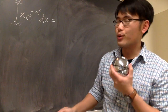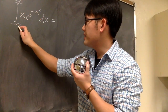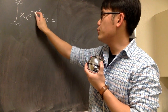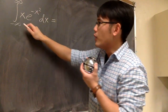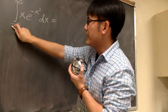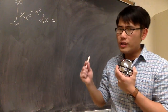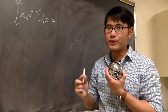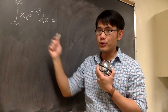Another improper integral: the integral from negative infinity to positive infinity of x times e to the negative x squared. Unfortunately, we see both infinities here — the negative and the positive infinity. Remember, we can only deal with one infinity at a time in the integral, so we have to break this apart into two pieces.